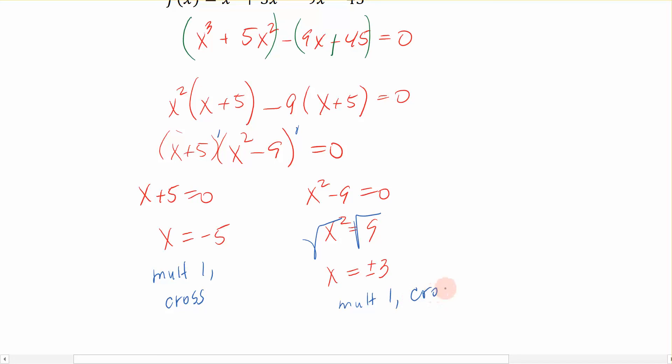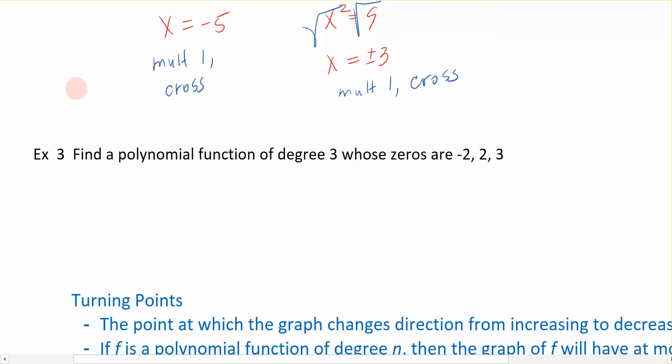Don't fall for the fact that this is a 2 on the inside of your factor. Be sure that you're looking for the exponent on your parentheses. And that's going to tell you the multiplicity. Let's look at one more example together.